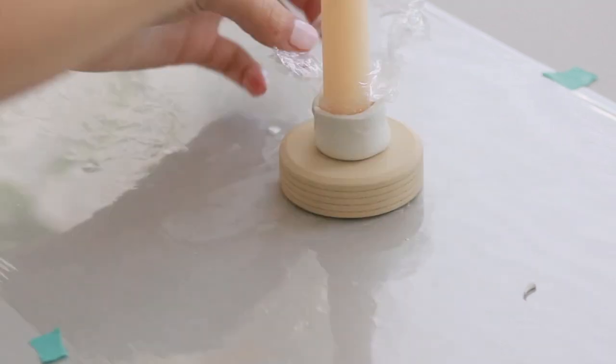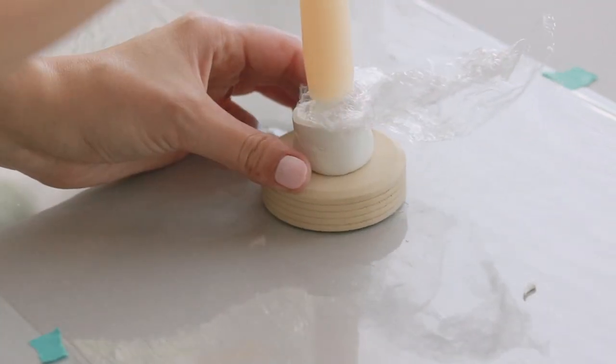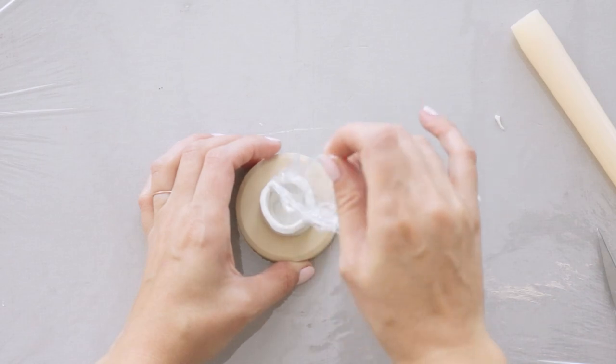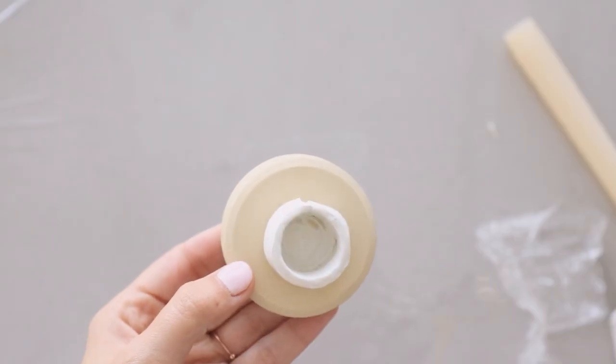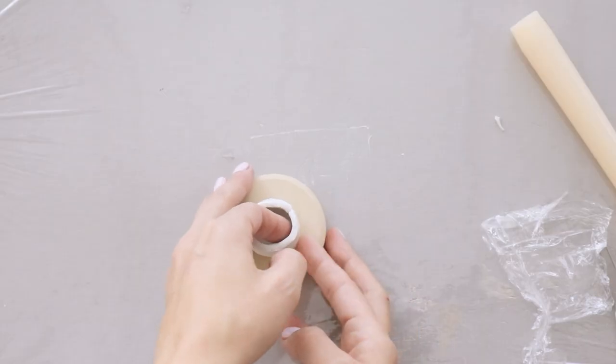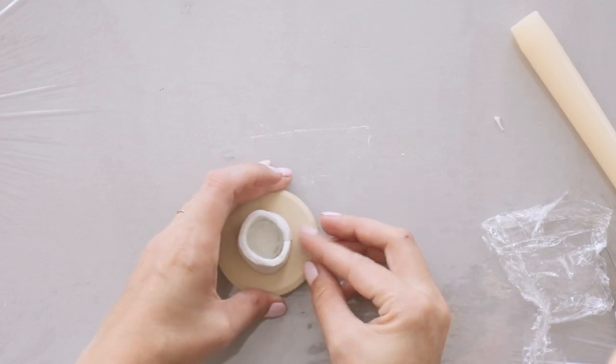I actually found it kind of hard to remove the saran wrap together with the candle, so I first removed the candle and then gently removed the saran wrap. Now you can slightly fix the shape if needed and let it set for 24 hours.